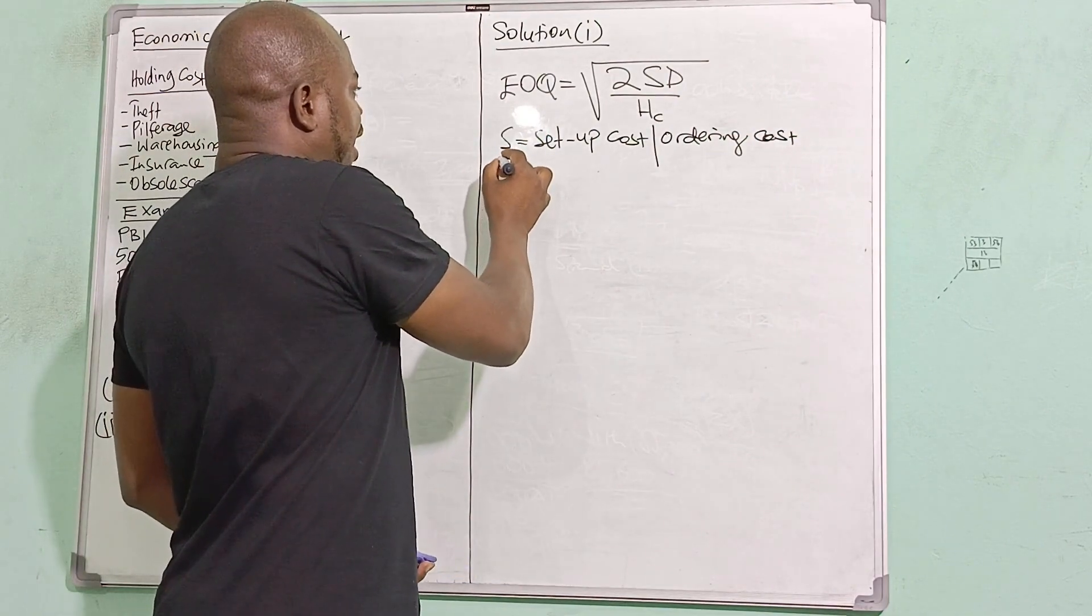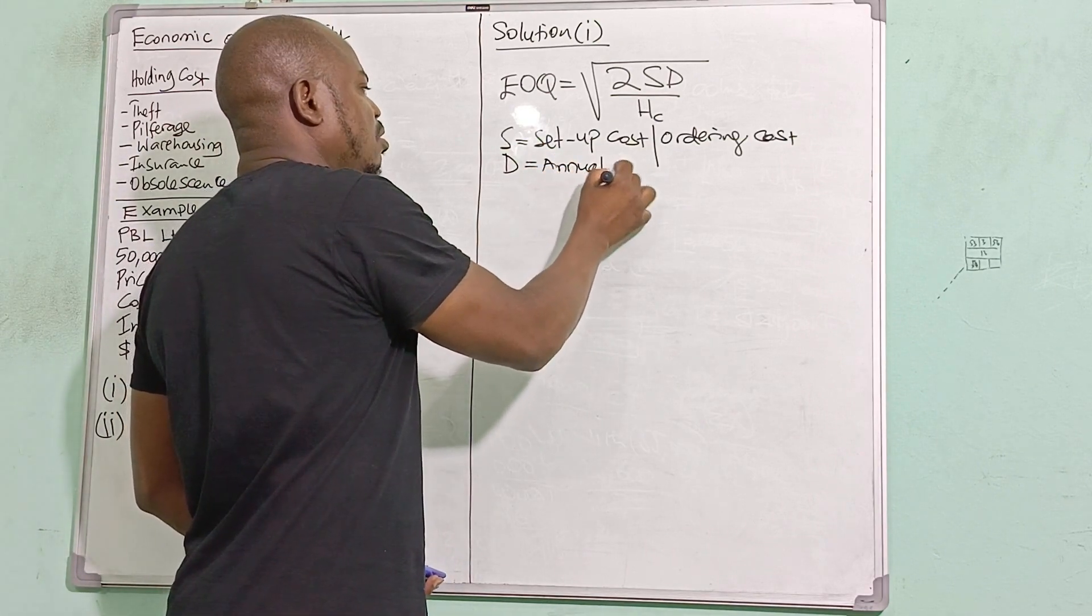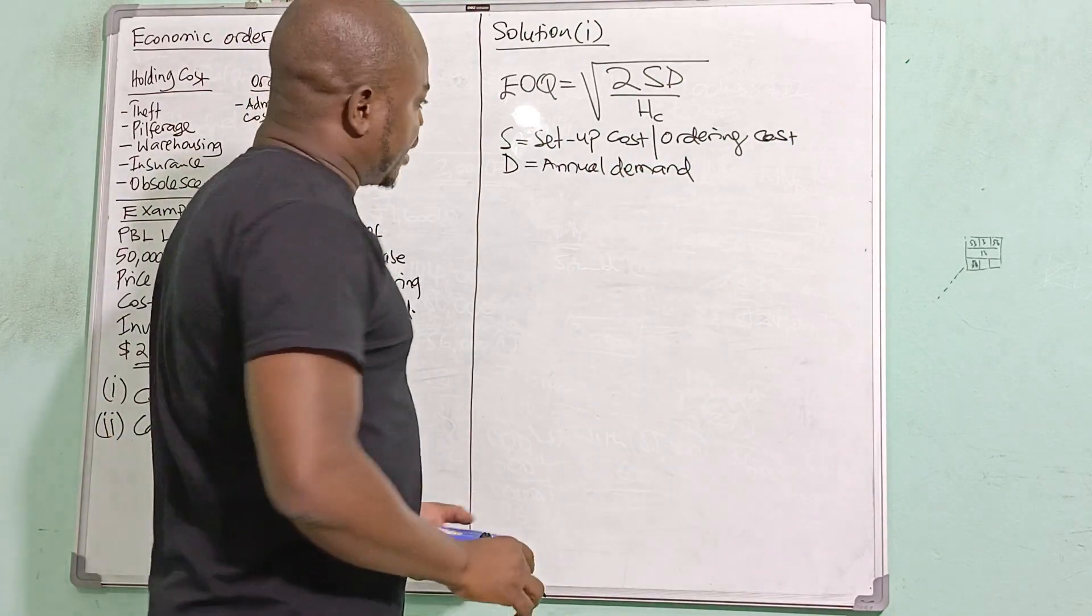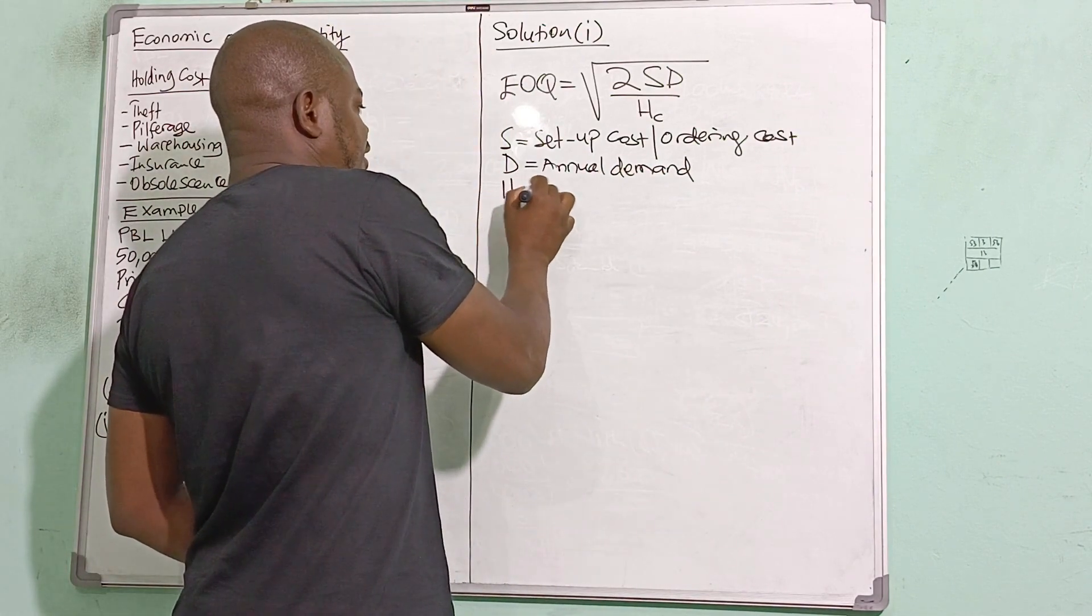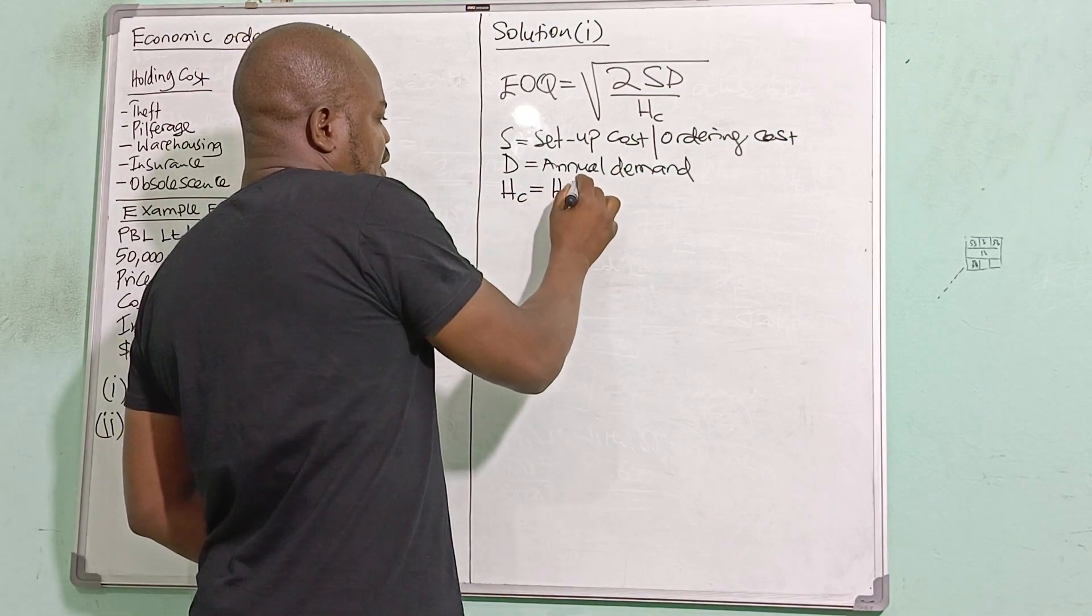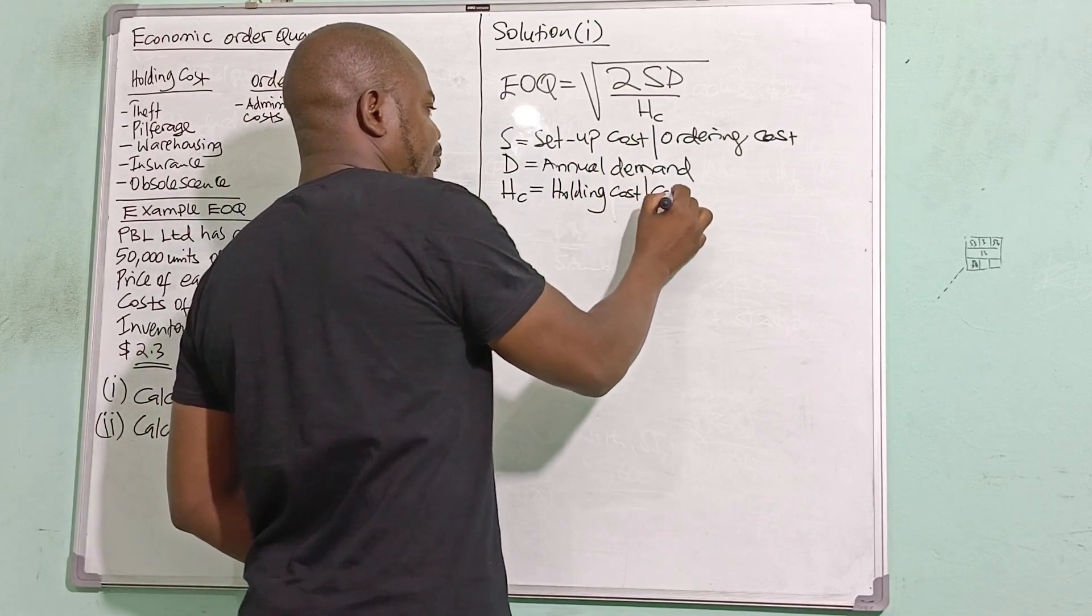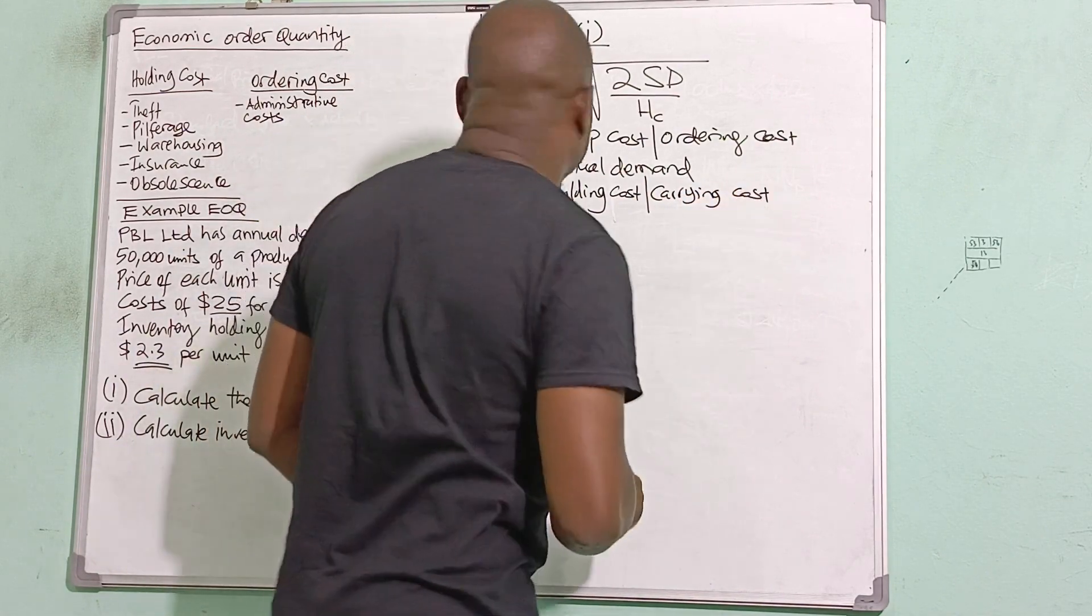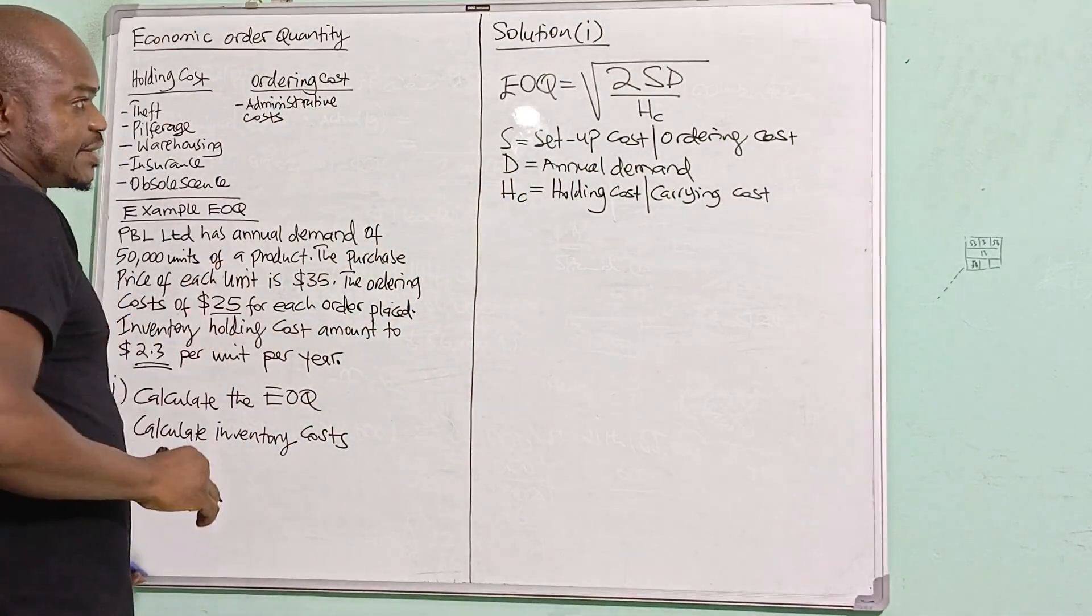And then I have D—D is actually annual demand. And then I have HC—HC is holding cost. The other name for holding cost is actually carrying cost. So let me see the information that I have so I can fuse in the numbers into the formula.